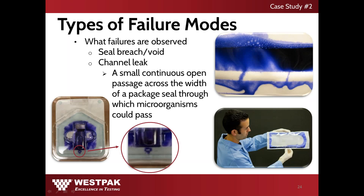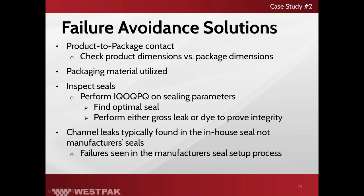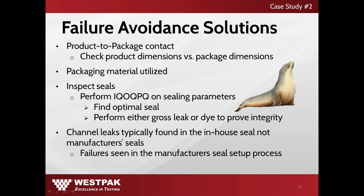The types of failures that can be found during dye penetration testing include a breach or void in the seal. Dye penetration will also detect and locate a leak equal to or greater than a channel formed by a 50 micrometer wire in a package. If you look at our thermoform tray on the left side of your screen, you can see the void identified in the seal. Recommendations to protect and ensure sterility are similar to those mentioned for gross leak detection — it is important to consider product-to-package contact. For instance, a pouch that is too small could cause a device to sit up against a seal, eventually causing a seal creep. It is also important to perform IQ/OQ/PQ on sealing parameters, as channel leaks are commonly found in in-house seals of pouches.